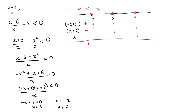Between negative 2 and 0, pick x equals negative 1. The first factor: double negative gives positive 1 plus 3, so positive. Negative 1 plus 2 is positive. But x is negative 1, so the denominator is negative. Overall: negative. Picking something between 0 and 3, say x equals 1: negative 1 plus 3 is positive; 1 plus 2 is positive; x equals 1 is positive — overall positive. For more than 3, say x equals 4: negative 4 plus 3 is negative; 4 plus 2 is positive; x is positive — overall negative.